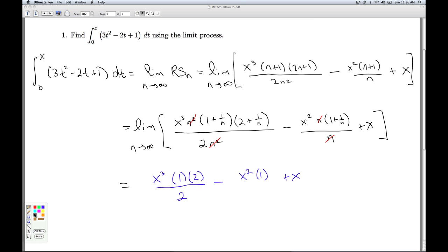So my grand final answer. The integral from 0 to x, 3t squared minus 2t plus 1 dt is equal to x cubed minus x squared plus x.